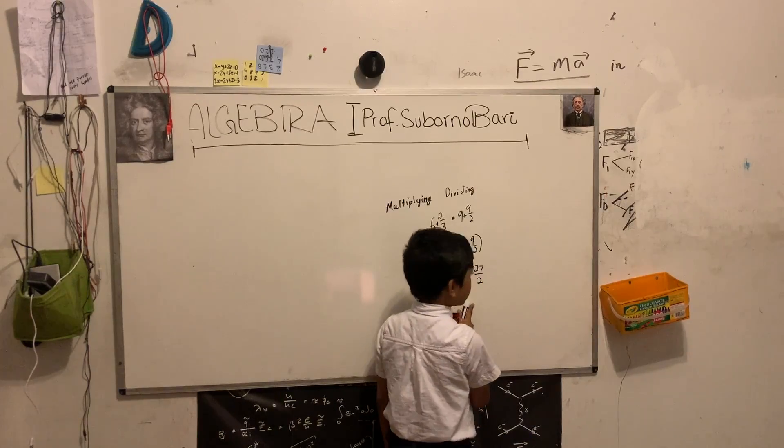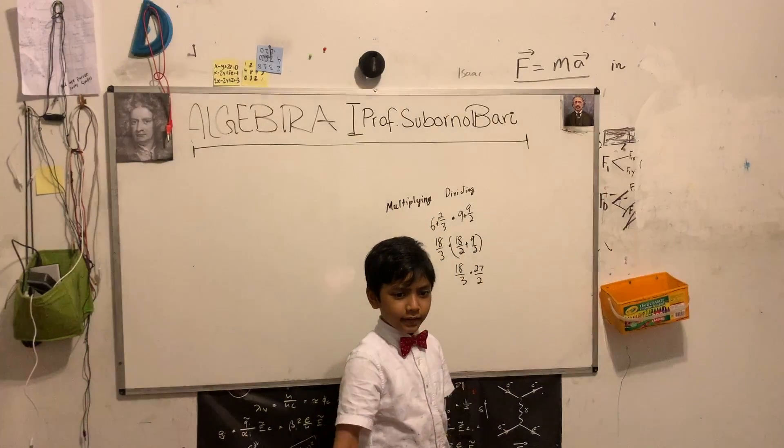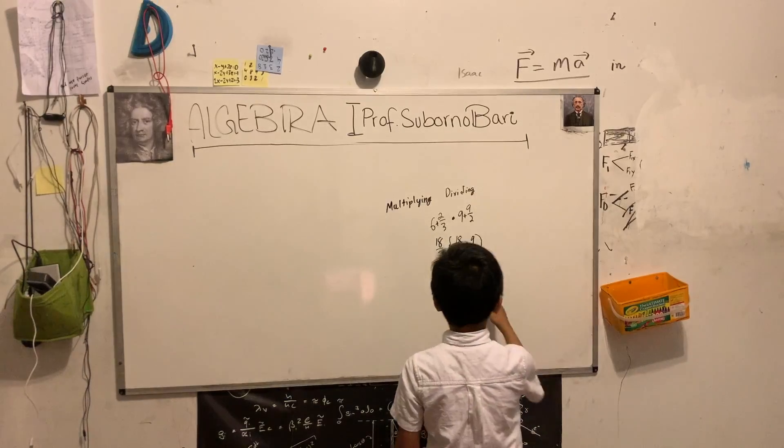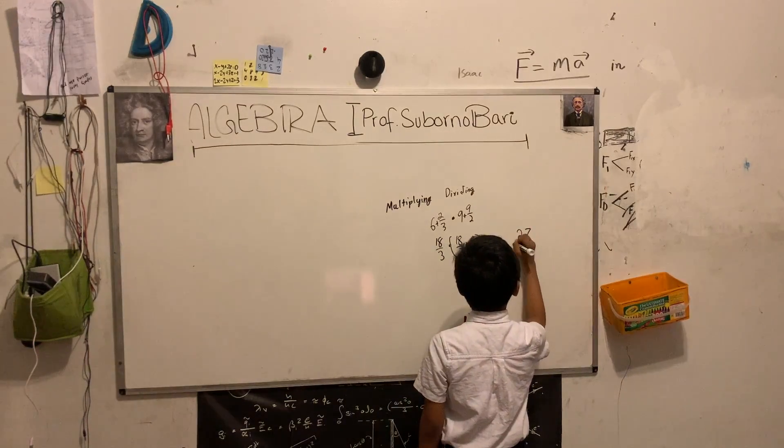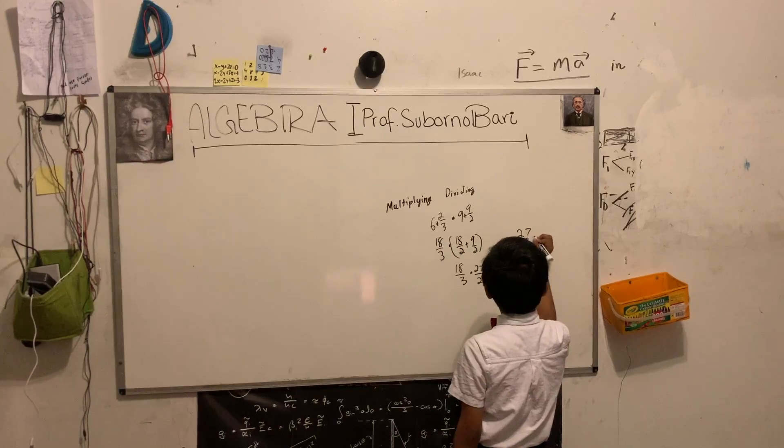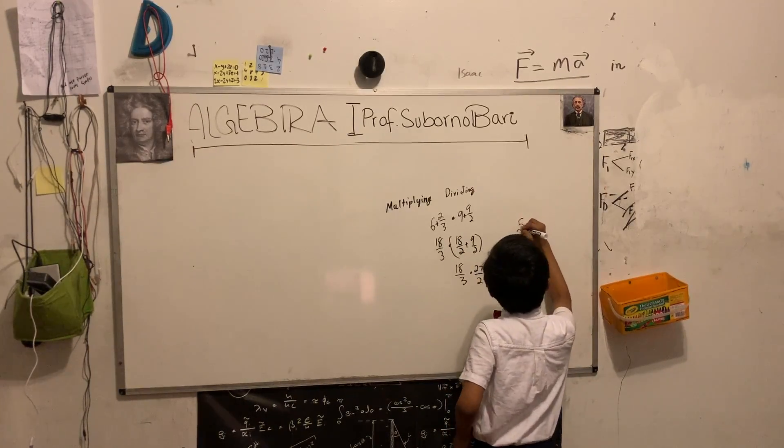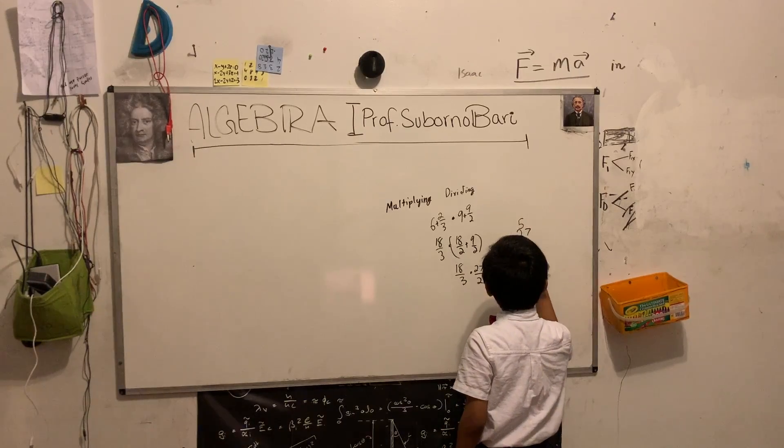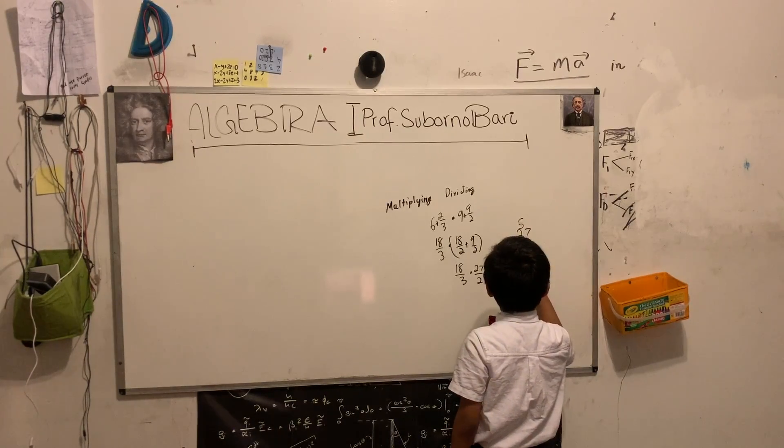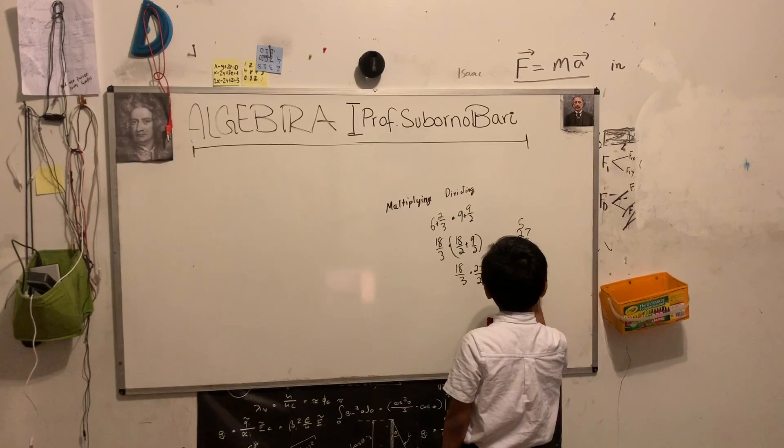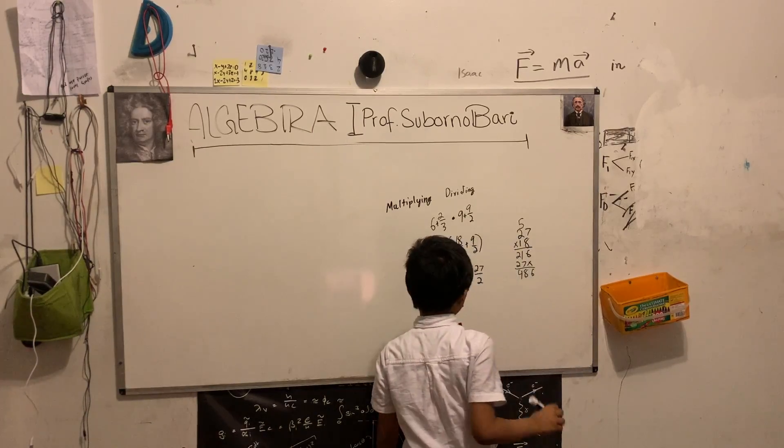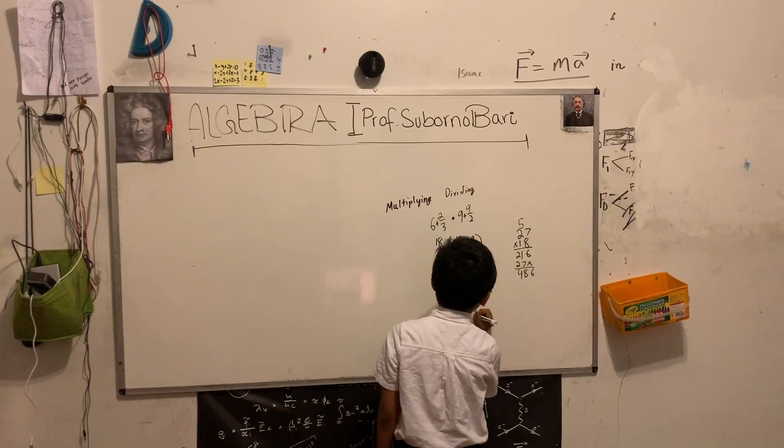Now, this is going to be painful, but bear with me here. We're going to multiply 27 and 18. So, obviously, what we would do is just do it the normal way. So, 6, 8, 4...486. 486 over 6.